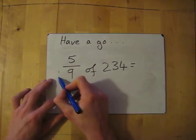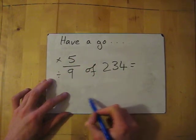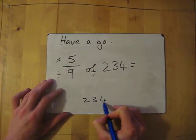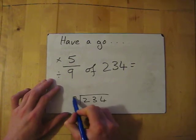Right, how this works. Again, divided by the bottom, times by the top. So 234 divided by the bottom, which is 9.